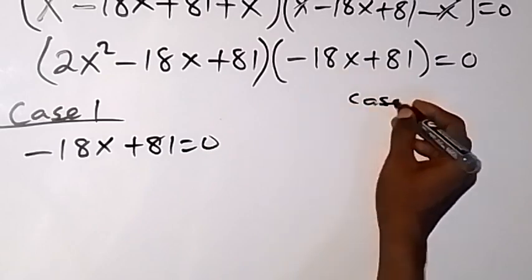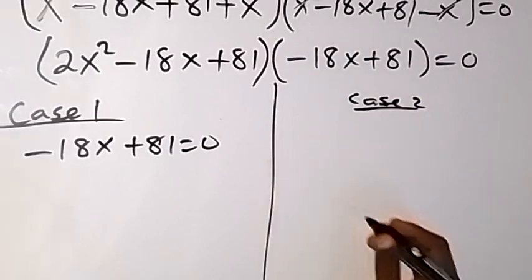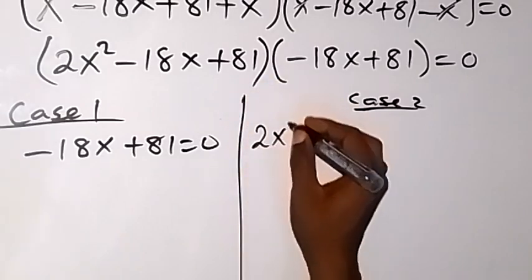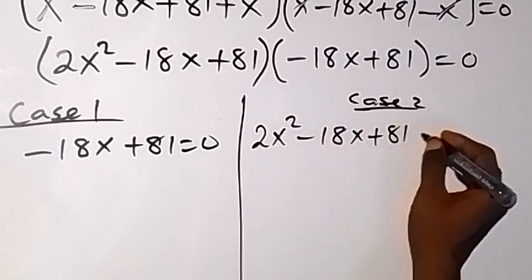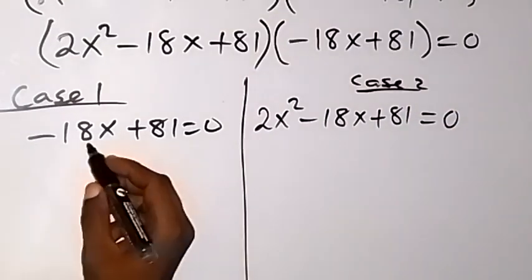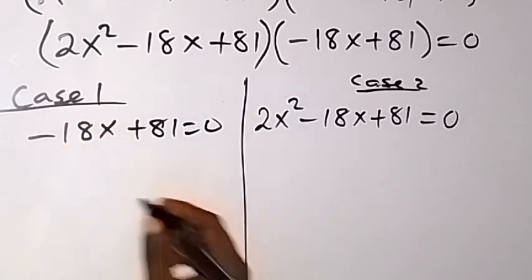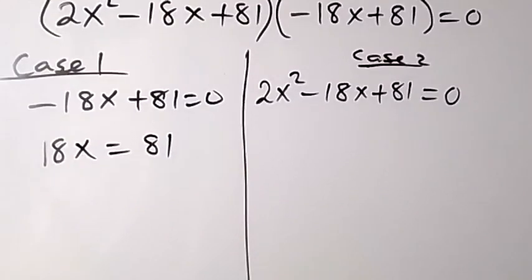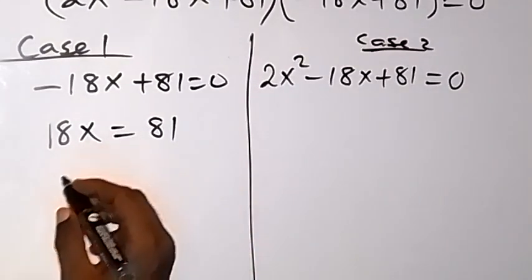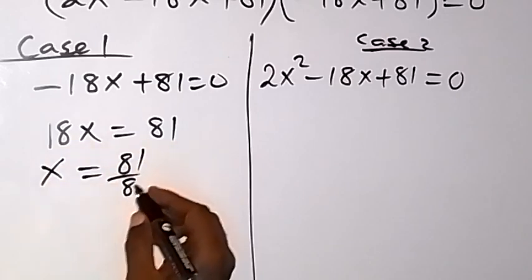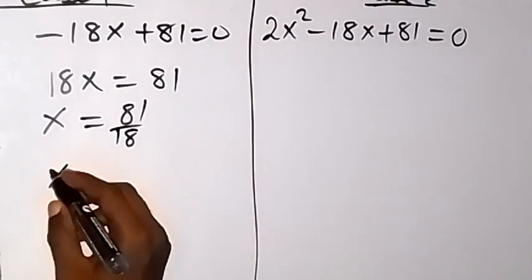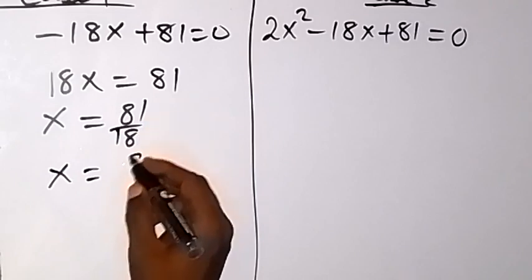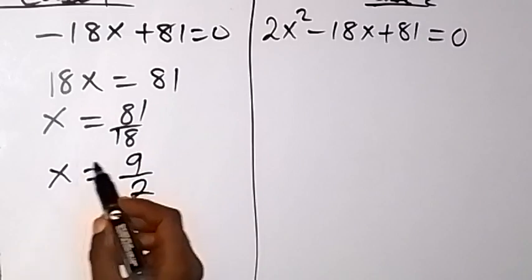Case 2 is 2x squared minus 18x plus 81 equals 0. From Case 1, we send minus 18x to the other side and get 18x equals 81. Dividing both sides by 18, we have x equals 81 over 18. Dividing both numerator and denominator by 9, we get x equals 9 over 2. So this is the first value of x.